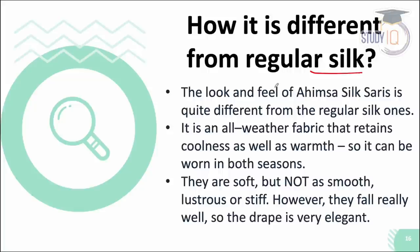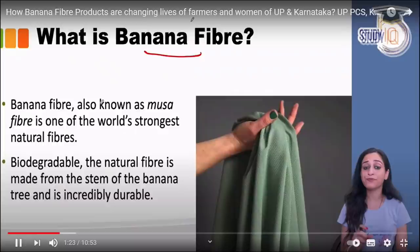How is Ahimsa silk different from regular silk? The feel is very different. It is an all-weather fabric that retains both coolness and warmth depending on the season. It is soft but not very smooth. It has a very elegant drape, making it a distinctive and versatile textile.